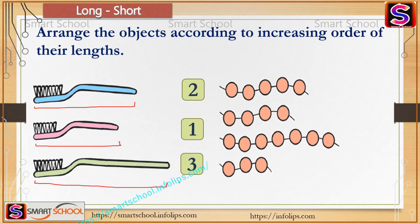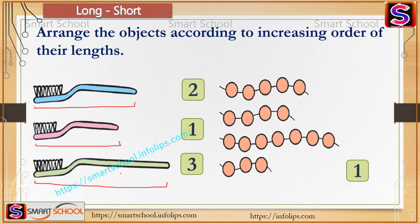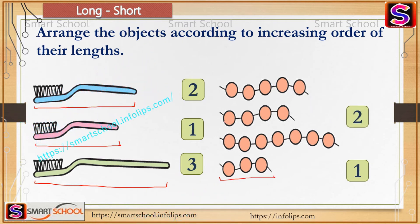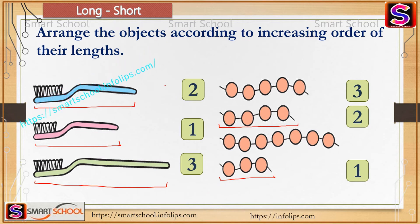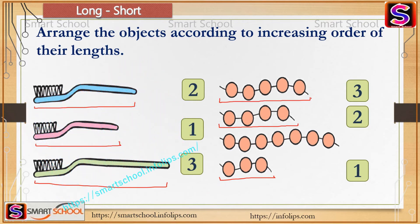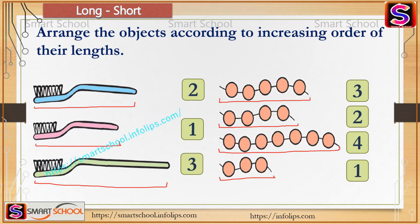Now there are beads on thread. The first one that comes first has the least length, then the second has more length than the first, the third has more length than the second, and the last one is the longest of all.